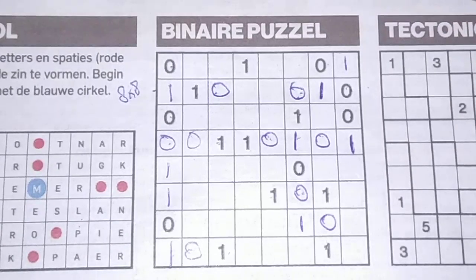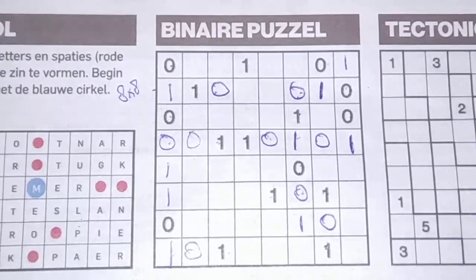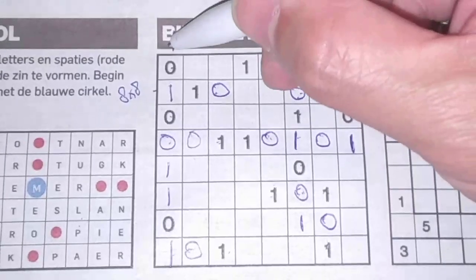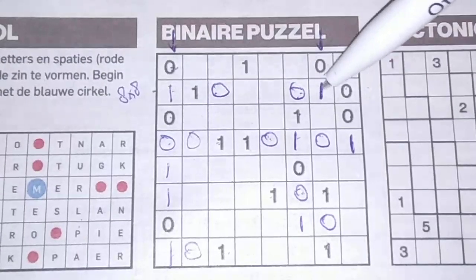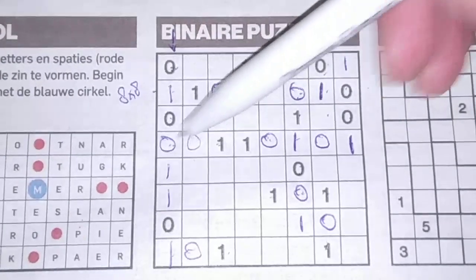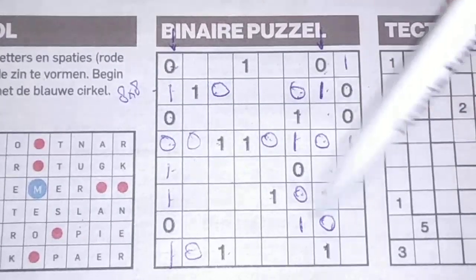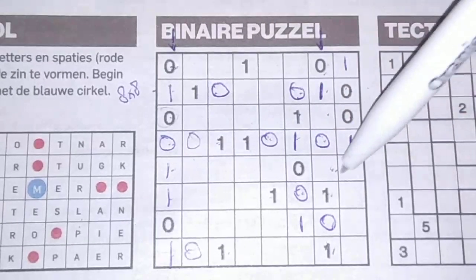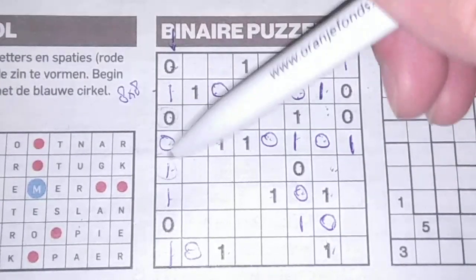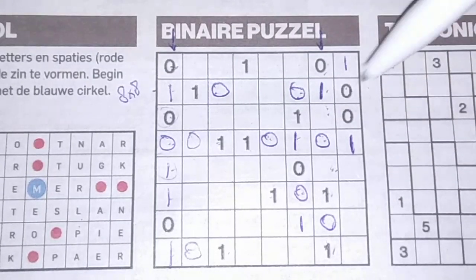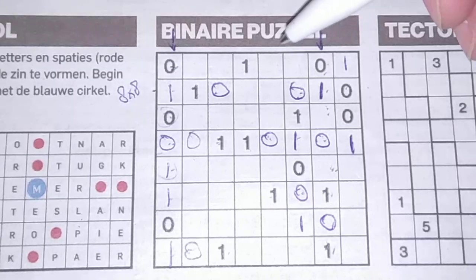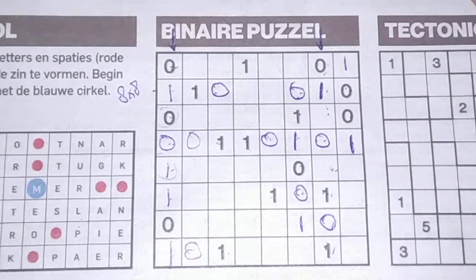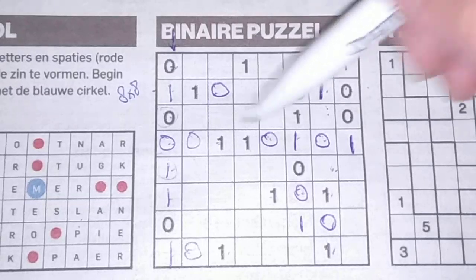Now I need to compare this column and that column. Let's compare: O, O, one, one, empty box — O, O, one, O, empty box — one, one, O, O, one, one. These two digits I need to switch, otherwise I'll have identical columns, which is not allowed. One of the rules of a binary puzzle is no identical columns or rows.